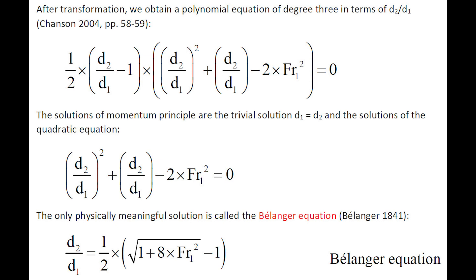The solution has one trivial equation, d1 equals d2, and among the two other solutions, only one is physically meaningful, and it is called the Bélanger equation.